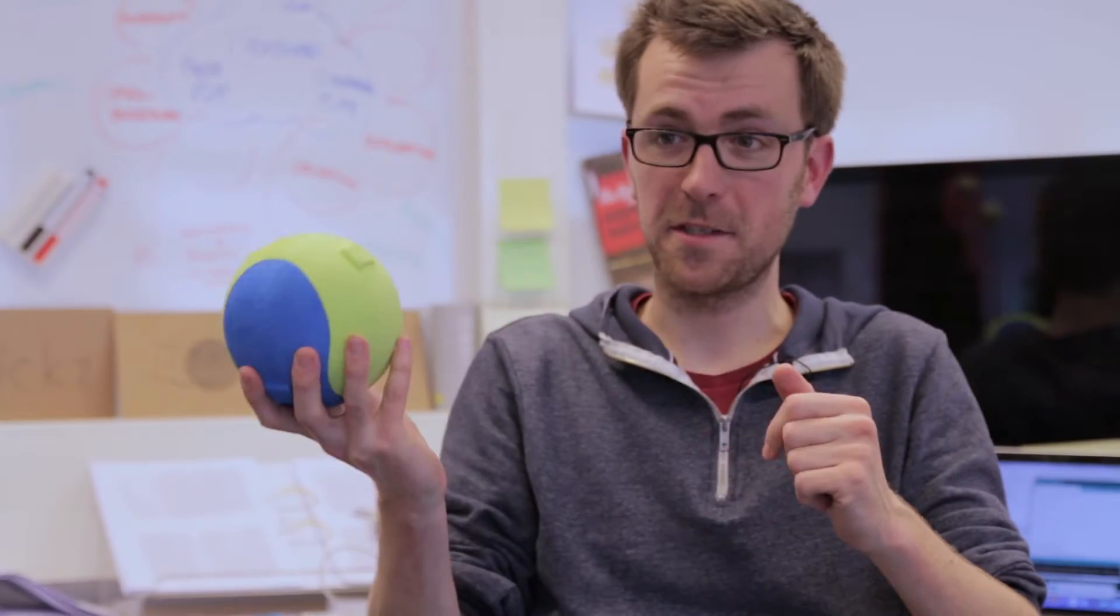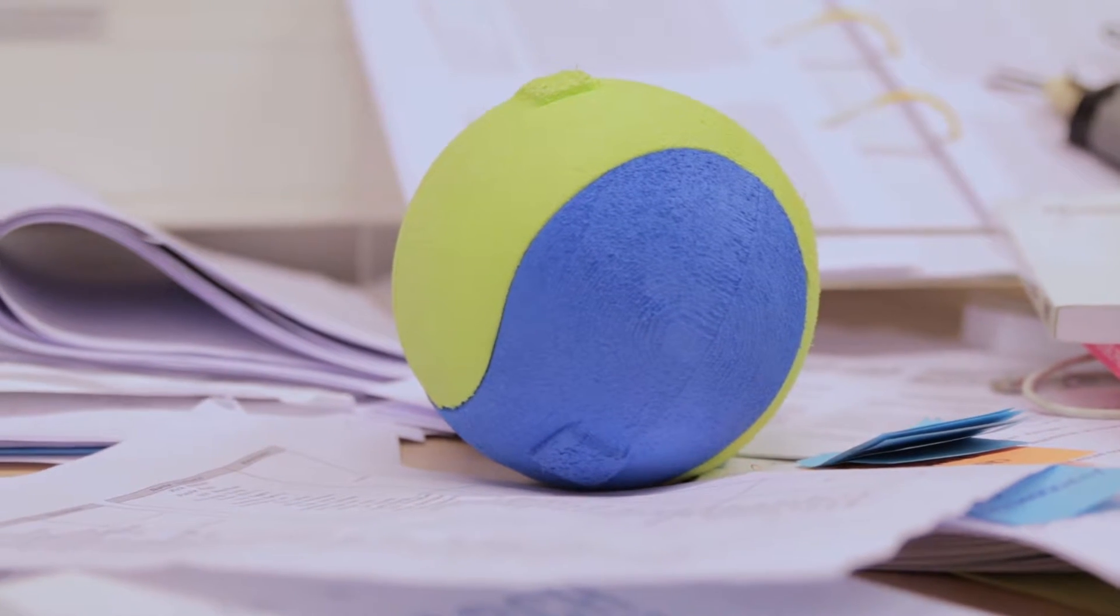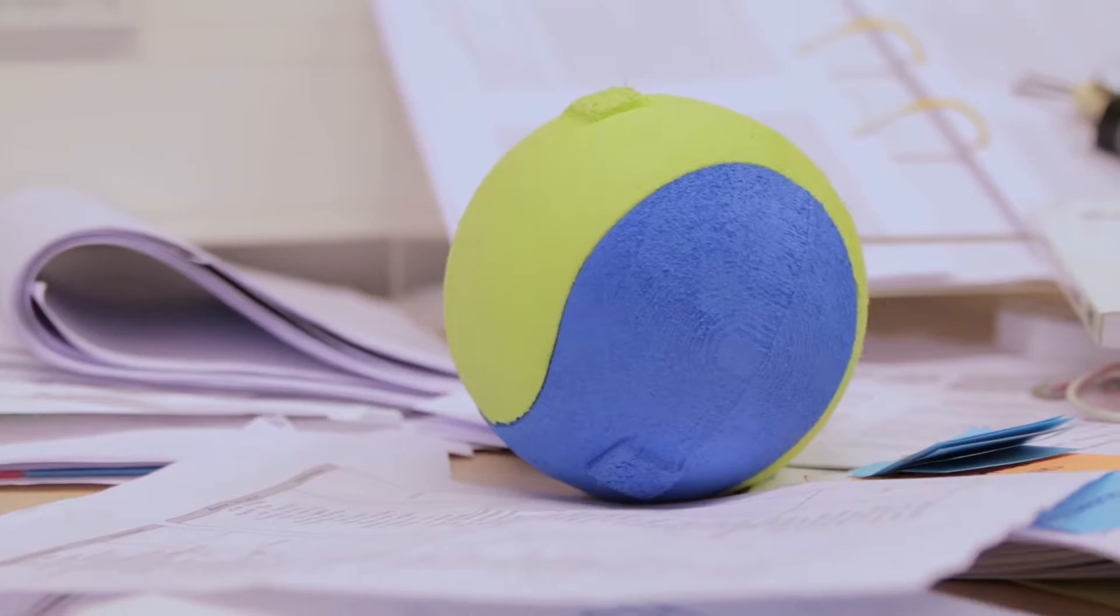So this is Fizzy. Fizzy is a little ball, it seems at first sight. But if you approach it, it rolls away from you. If you pick it up, it starts shaking. And after a while maybe it gets used to you, and if you stroke it, then it starts purring.